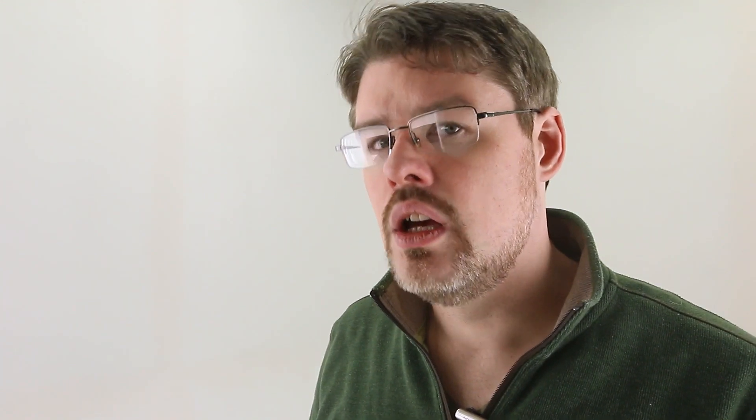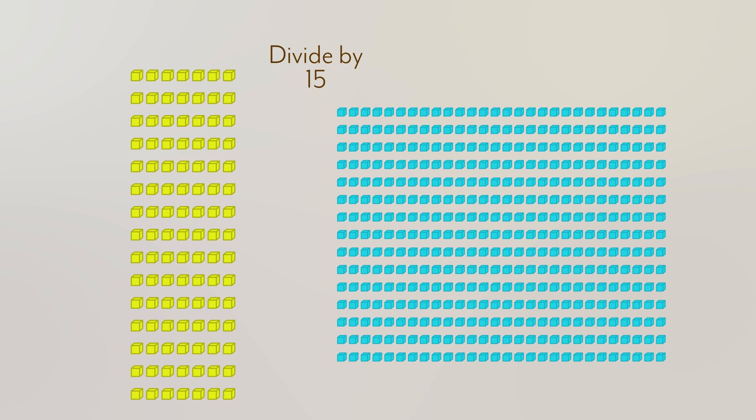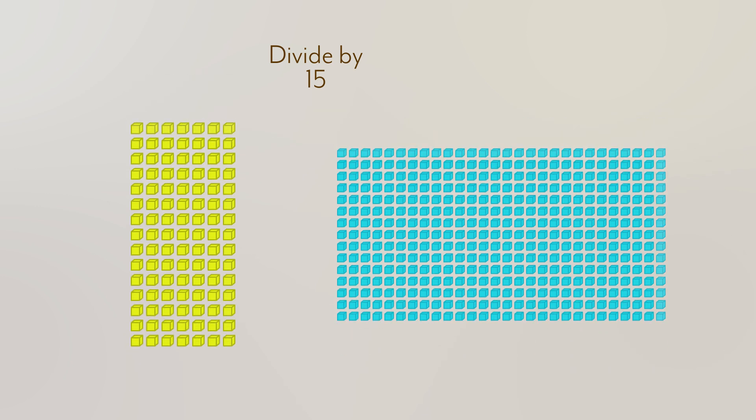So if we cut the piles in half, that is, divide them by two, and it remained in balance, could we then divvy them up using different numbers? Could we divide by three or five or something larger? Sure. In fact, technically, we can divide by anything we want, even if it doesn't divide evenly on both sides.